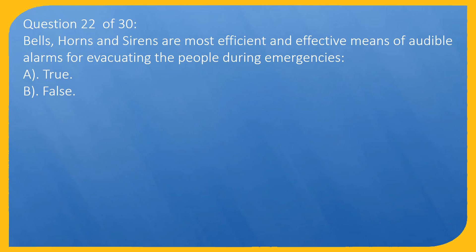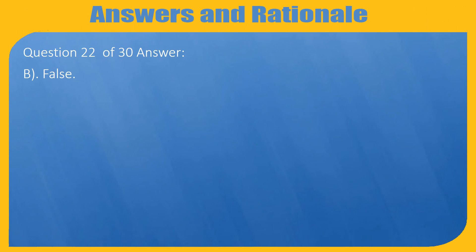Question 22 of 30: Bells, horns and sirens are most efficient and effective means of audible alarms for evacuating the people during emergencies. A. True, B. False. Answer: B. False.